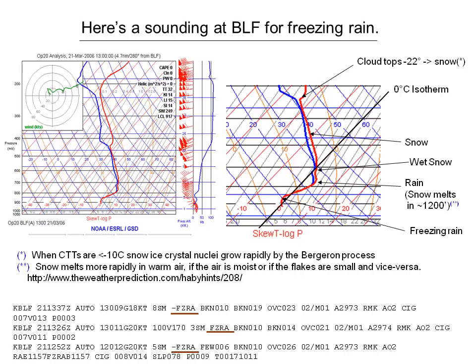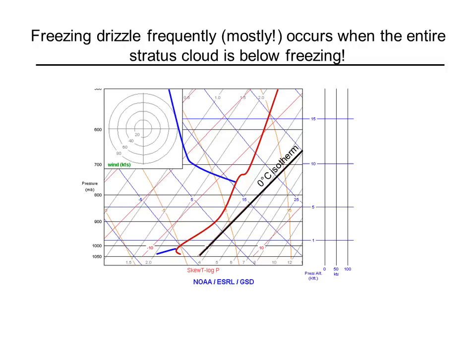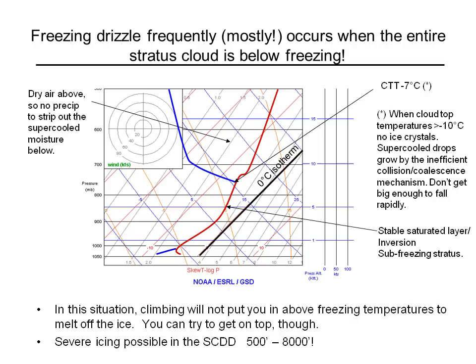Then we have rain dropping from about 6,000 to 7,000 feet down to where the temperature drops below freezing again at about 5,000 feet. Between 5,000 feet and the surface the temperature is below freezing — we have rain dropping into below-freezing air, which is the recipe for freezing rain. Looking at the METARs from around the time of the 1300 Zulu sounding — at 1337, 1326, and 1252 Zulu — they report light freezing rain, freezing rain, and light freezing rain. Exactly as predicted.